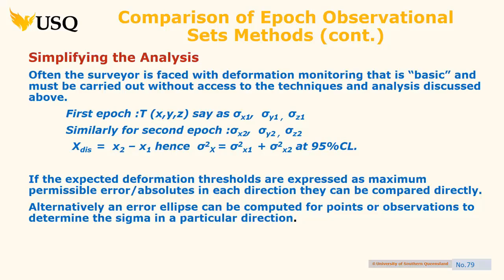Or you could mix that with your own knowledge of error propagation. For each distance, given the vertical angle, horizontal angle, and distance, you can use a spreadsheet to determine what you expect the target standard deviation to be. You can also compute an error ellipse from that — easy if you've got software, less easy by hand.